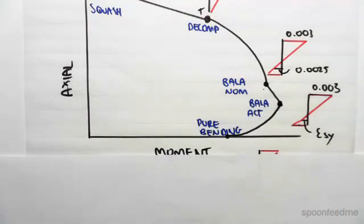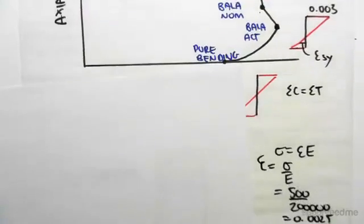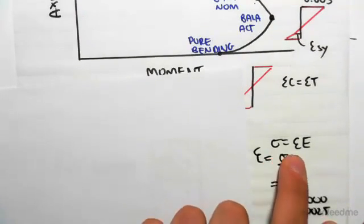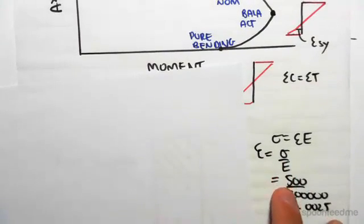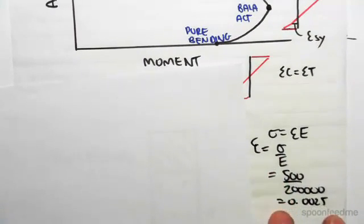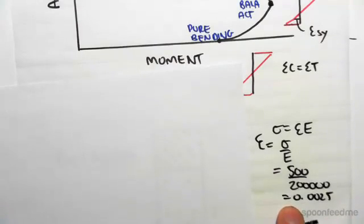Now, the code assumes that all the steel is 500 MPa steel. So what that means is that if we were to use the formula stress equals strain times elastic modulus, the strain is the stress on the elastic modulus. For 500 MPa steel, the yield strain is 0.0025.